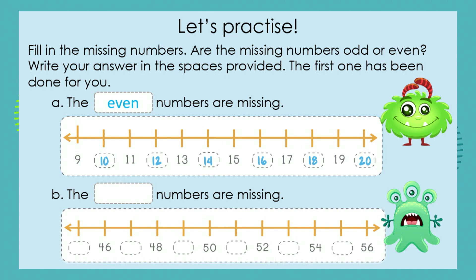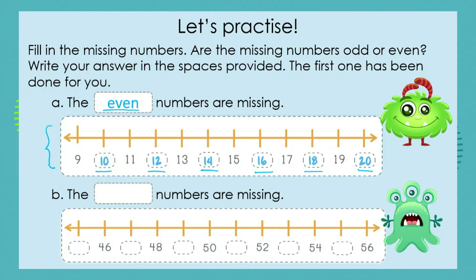We are now going to practice our odd and even numbers. We are first going to fill in the missing numbers and then decide: are the missing numbers odd or even? We can see in the number line over here that the missing numbers were 10, 12, 14, 16, 18, and 20. And what can you see about these missing numbers, grade ones? Yes, these numbers end in 2, 4, 6, 8, and 0 — so this means that they are even numbers. Good work. We can see that we need to write that the even numbers are missing.